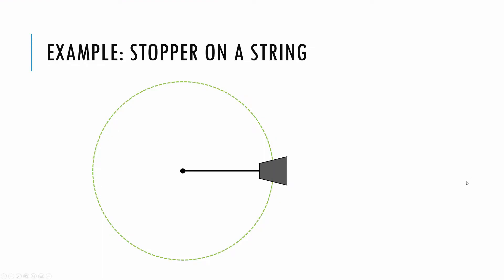One of the simplest examples is you swing something around on a string — an experiment we've done in class. You can do it at home with a string, a yo-yo, even a set of keys — something on the end of a string. Put on some safety goggles and be careful. You can grab a thing on a string and swing it around your head like a sling, moving in a horizontal circle. The only force acting on that thing is a force towards the center.